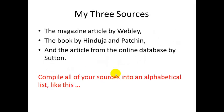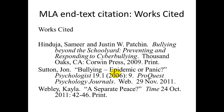So I have three sources, and I've actually used them all in my paper: the magazine article by Webley, the book by Hinduja and Patchen, and the article from the online database by Sutton. Now that I've written my paper, I can begin to compile all of my sources into an alphabetical list — this is an MLA end-text citation, known as a works cited page. The sources are listed not in the order I cited them in my paper, but in alphabetical order: H, S, W. There is also a hanging indent, which means instead of tabbing at the beginning of a paragraph, I'm indenting the lower lines of the works cited page entries.